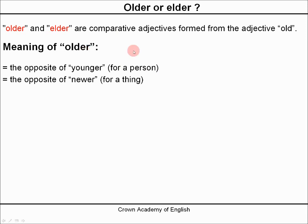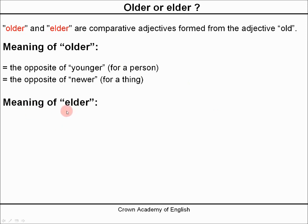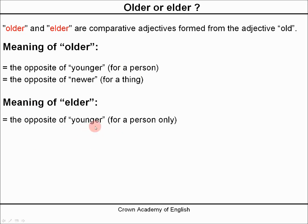So older we can use it to describe a person or a thing. The meaning of elder is the opposite of younger, and we only use elder to describe people. So that is one of the big differences between older and elder.